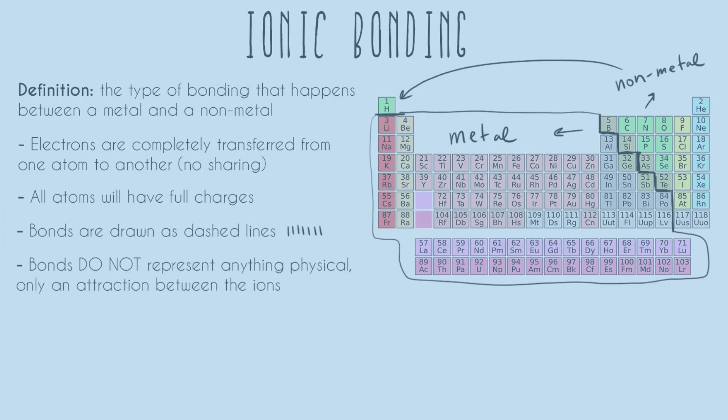And so another important thing is that in ionic bonds, the bonds do not represent anything physical. All they represent is an attraction between the atoms or now they're ions, now that electrons have been transferred. And so this is different than covalent bonds, where the bond literally represents two electrons that are being shared. In ionic bonds, it's just saying these two atoms, these ions are attracted to each other.